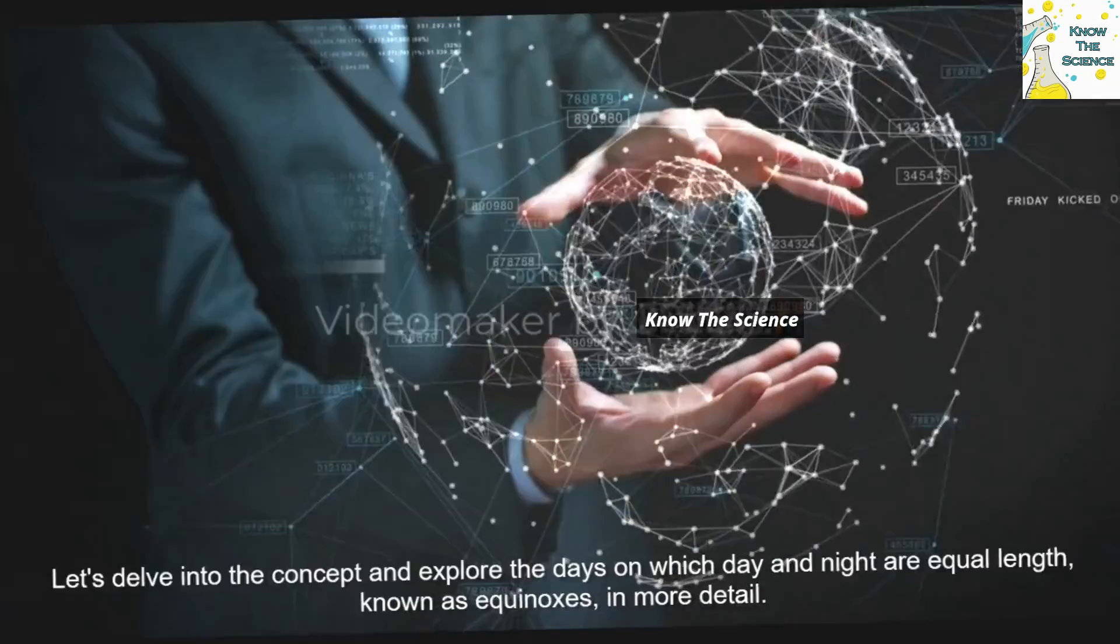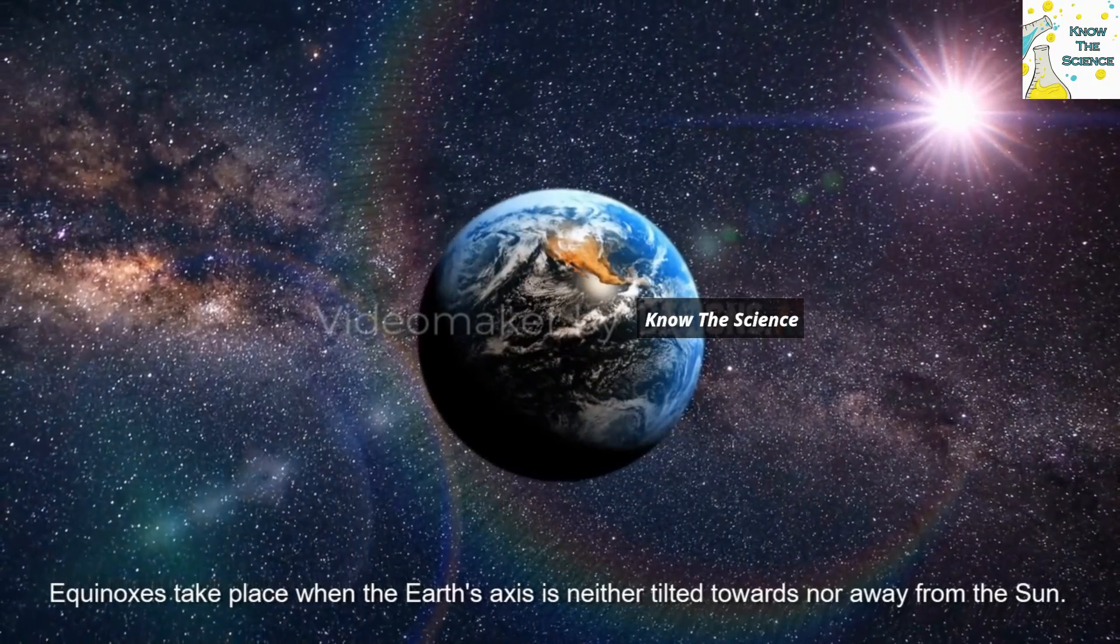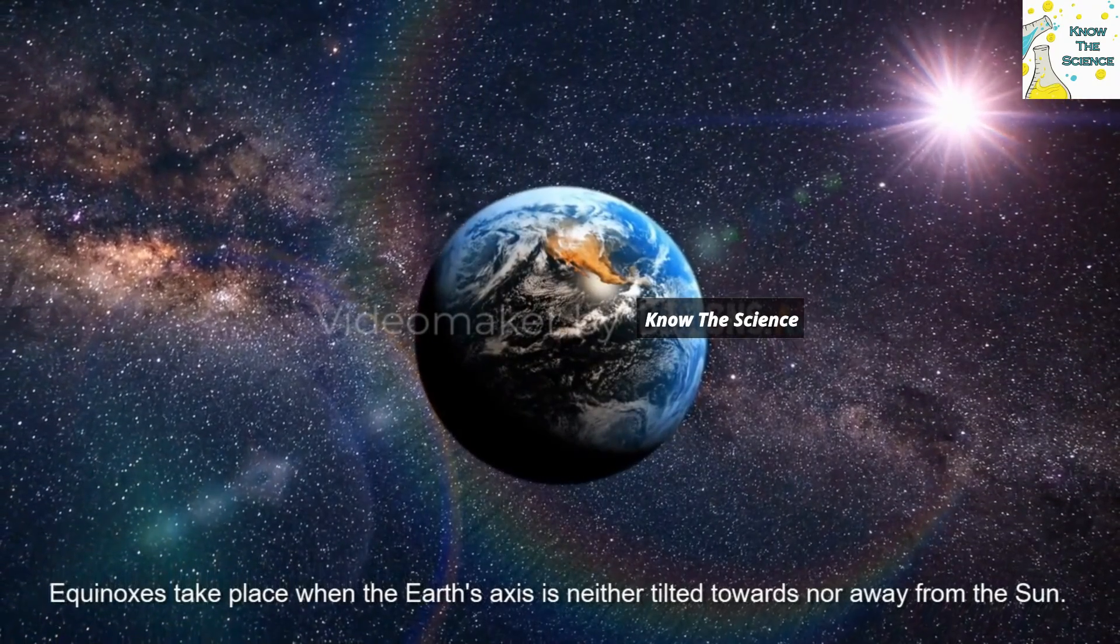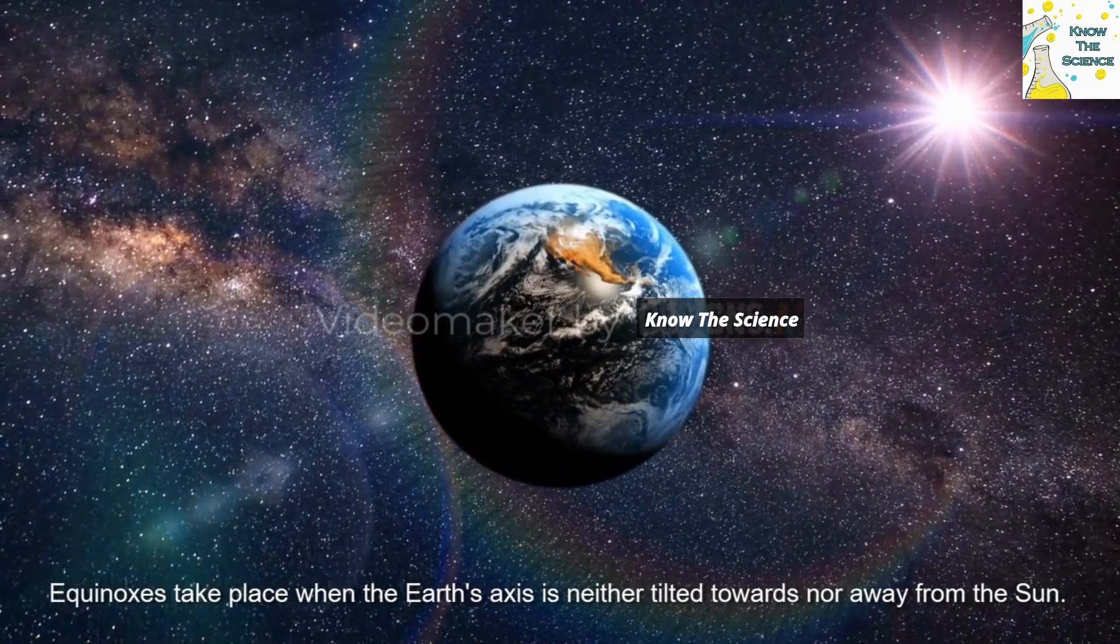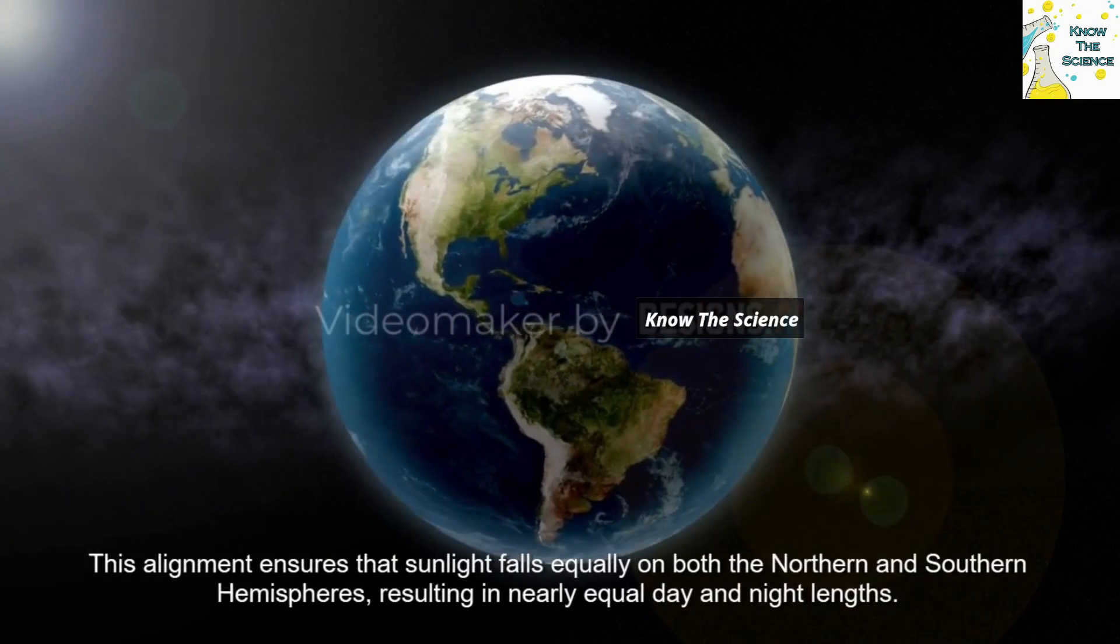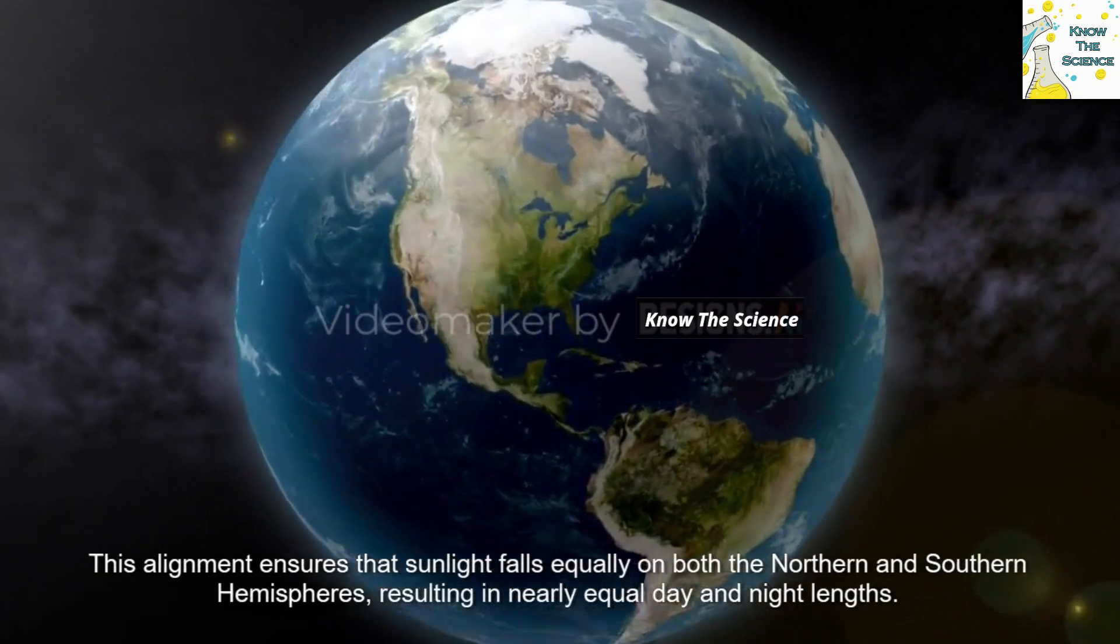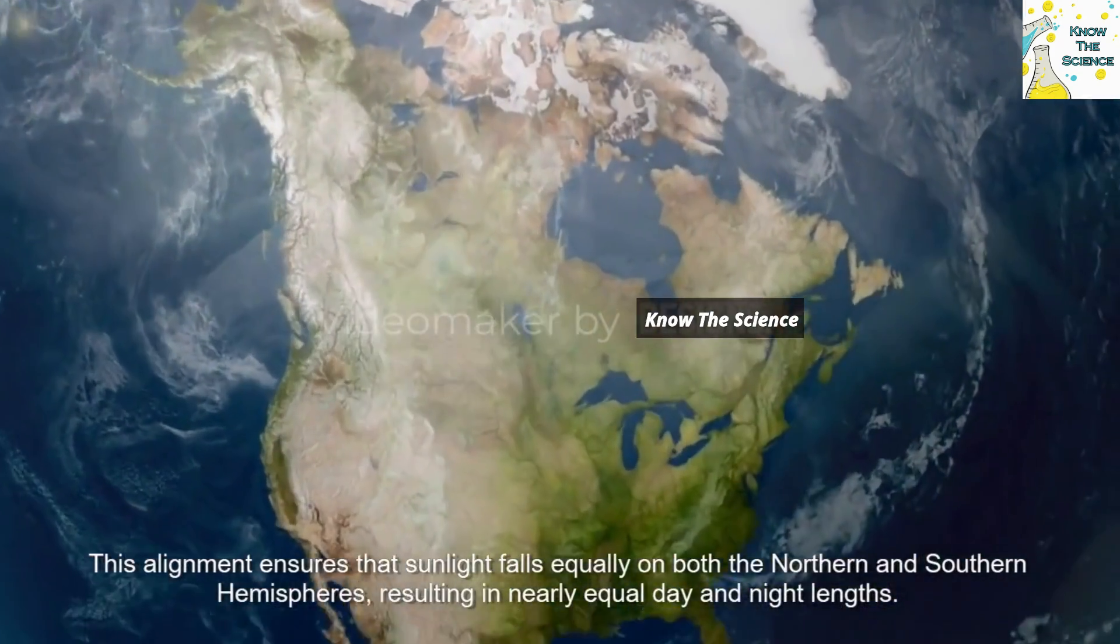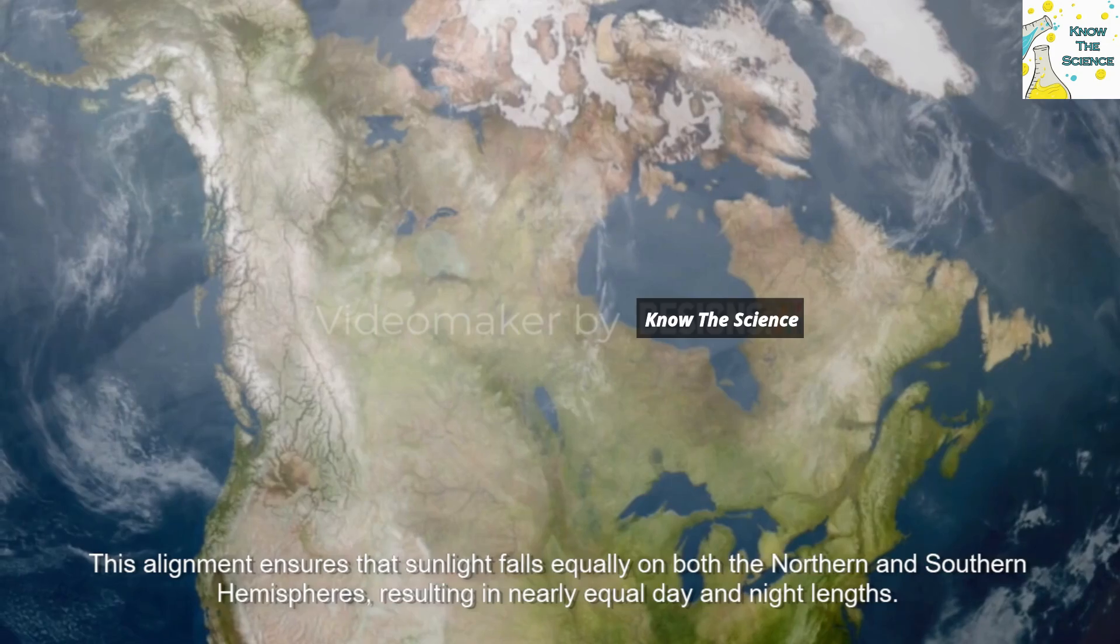Equinoxes take place when the Earth's axis is neither tilted towards nor away from the Sun. This alignment ensures that sunlight falls equally on both the Northern and Southern Hemispheres, resulting in nearly equal day and night lengths.